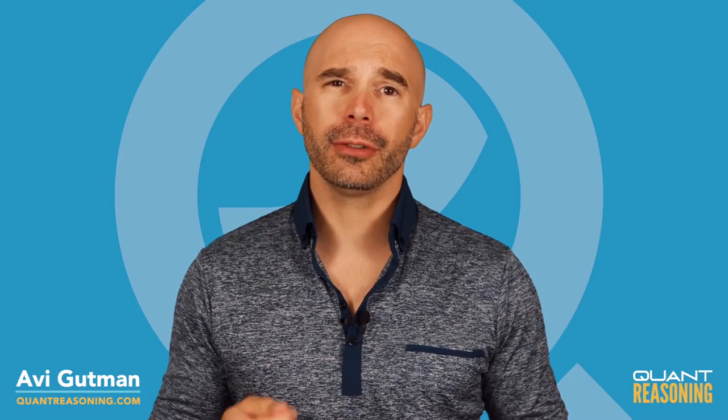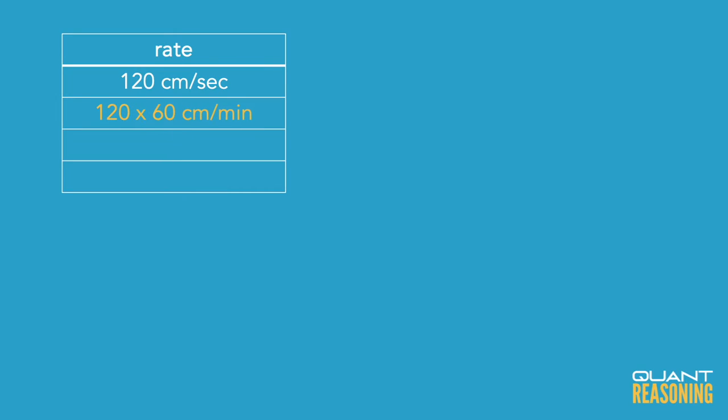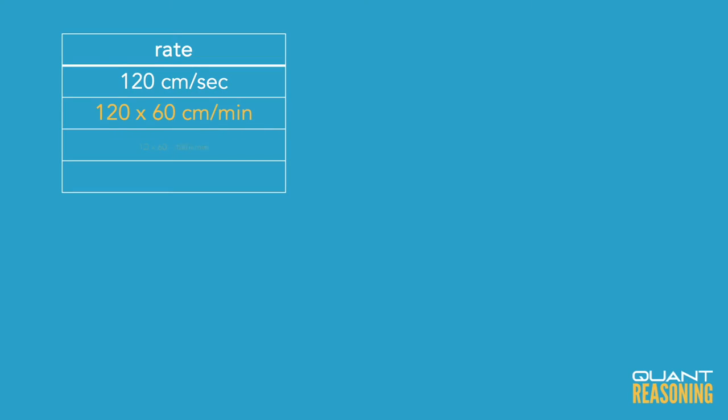We have a rate of 120 centimeters per second. To find what that looks like per minute — a minute is 60 times as long as a second — so in a minute you'd travel 60 times as far: 120 times 60 centimeters per minute. To convert to meters, since there are 100 centimeters in a meter, we divide by 100, which cancels two zeros. We end up with just 12 times 6, which is 72 meters per minute.